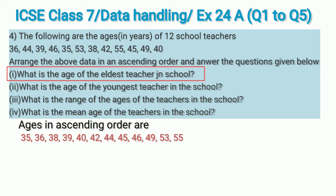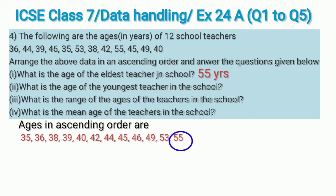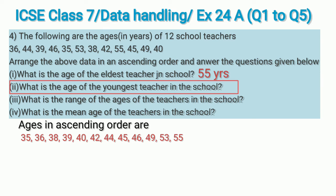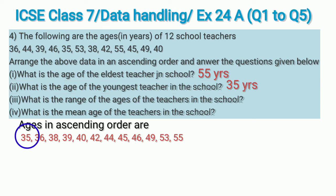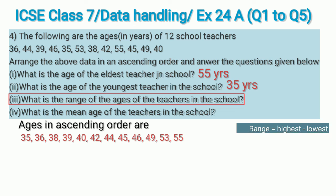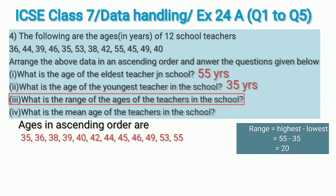What is the age of the eldest teacher? The eldest teacher is 55 years old — that is last in the order. What is the age of the youngest teacher? That is the first age, which is 35 years. What is the range of ages? Range is highest minus lowest, that is 55 minus 35, which is 20. So the range of ages is 20 years.